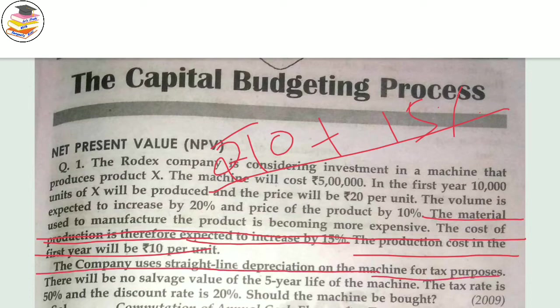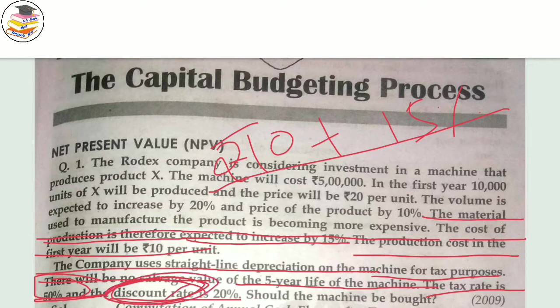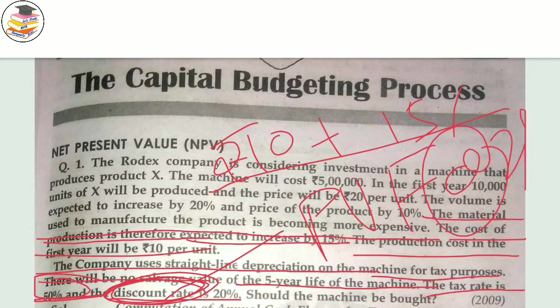The company uses the straight line method for depreciation of the machine for tax purposes. There will be no salvage value, the life of the machine is 5 years, the tax rate is 50 percent, and the discount rate is 20 percent — meaning the present value factor is at 20 percent. The question asks: should the machine be bought? We have to make this decision through calculation.